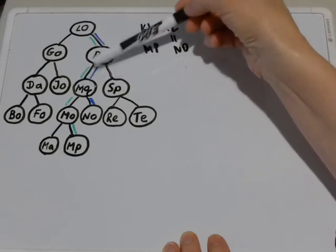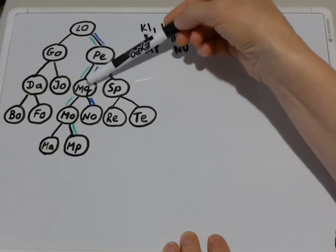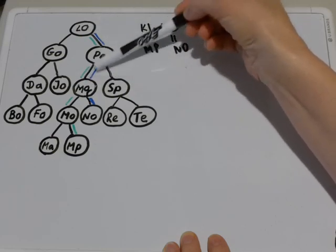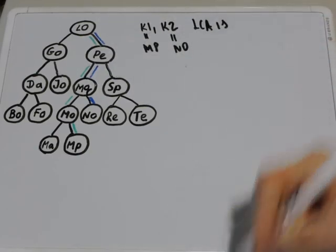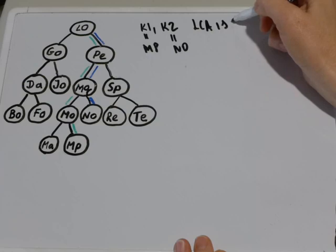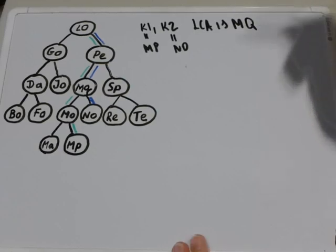Out of these common ancestors, MQ is the lowest in the tree. So, MQ is the lowest common ancestor of nodes MP and NO.